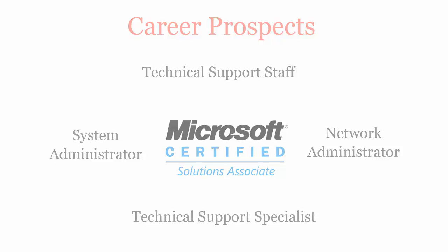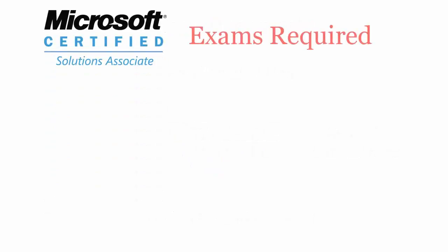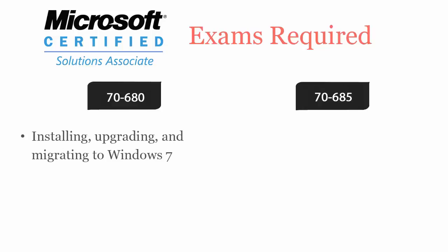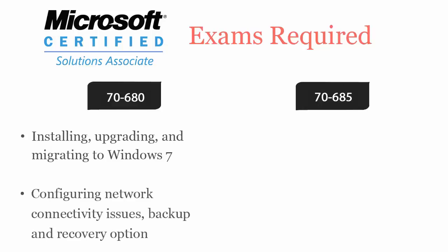To become a Microsoft Windows 7 Enterprise Desktop Support Technician Certified Professional, you will have to pass two exams: 70-680 and 70-685. Exam 70-680 covers installing, upgrading and migrating to Windows 7, configuring network connectivity issues, and backup and recovery options.